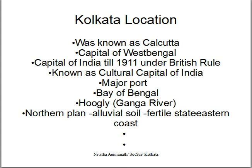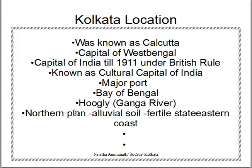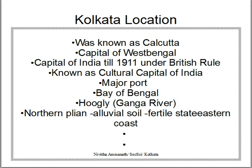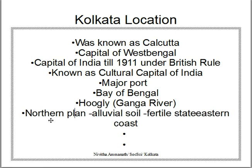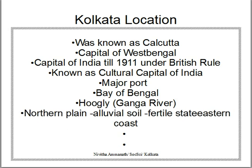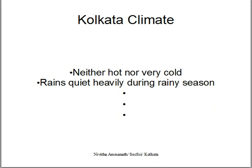Calcutta is part of the northern plain, and alluvial soil is very fertile. The state is also part of the eastern coastal plain, making it agriculturally rich.